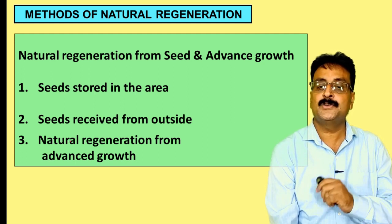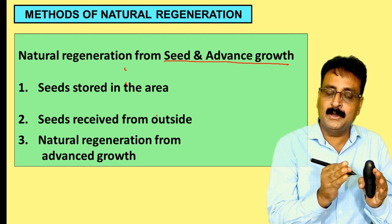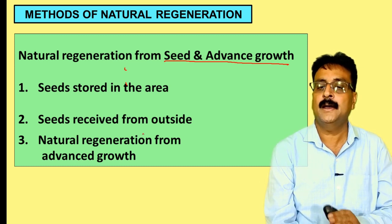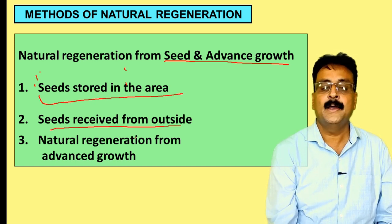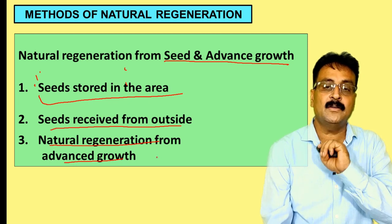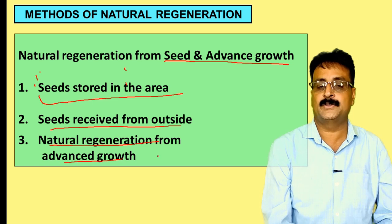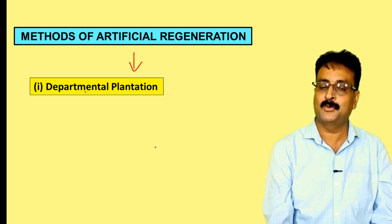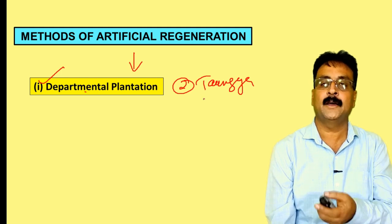The method of natural regeneration is through seeds and through advanced growth. Natural regeneration has three sub-heads: seed stored in the area, seed received from outside, and natural regeneration from advanced growth. Natural regeneration is only done when we are very certain it will succeed in that area; otherwise we proceed with artificial regeneration.